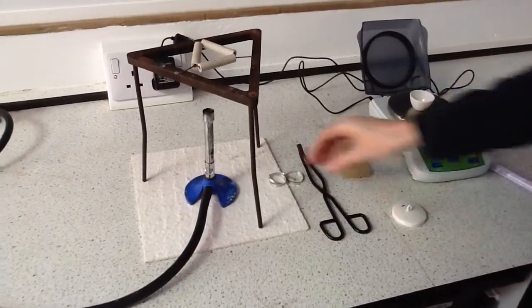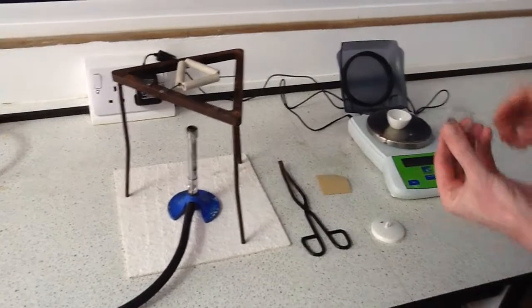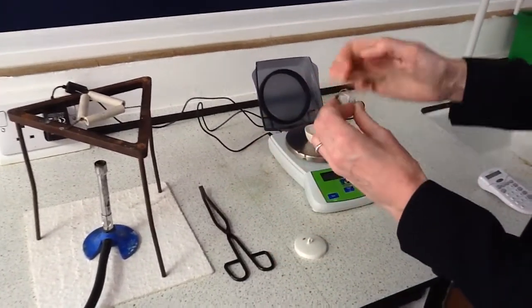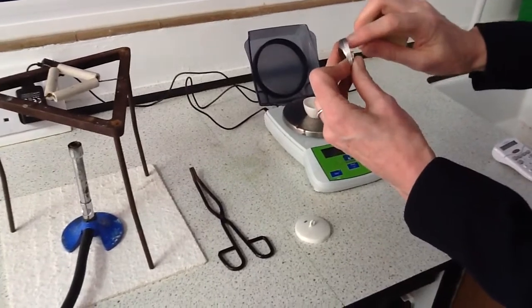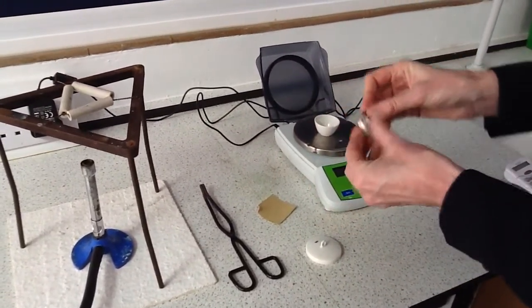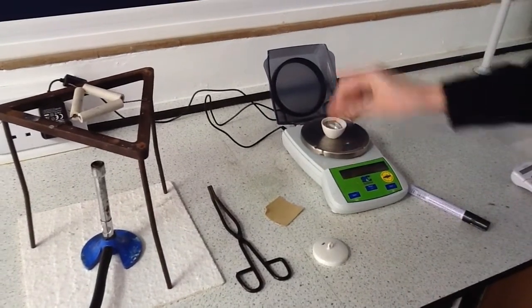Then we measure the mass of the crucible, the lid and the magnesium. The magnesium has been rubbed with some sandpaper. The reason is to get rid of any oxide layer because that means that the magnesium wouldn't be pure.